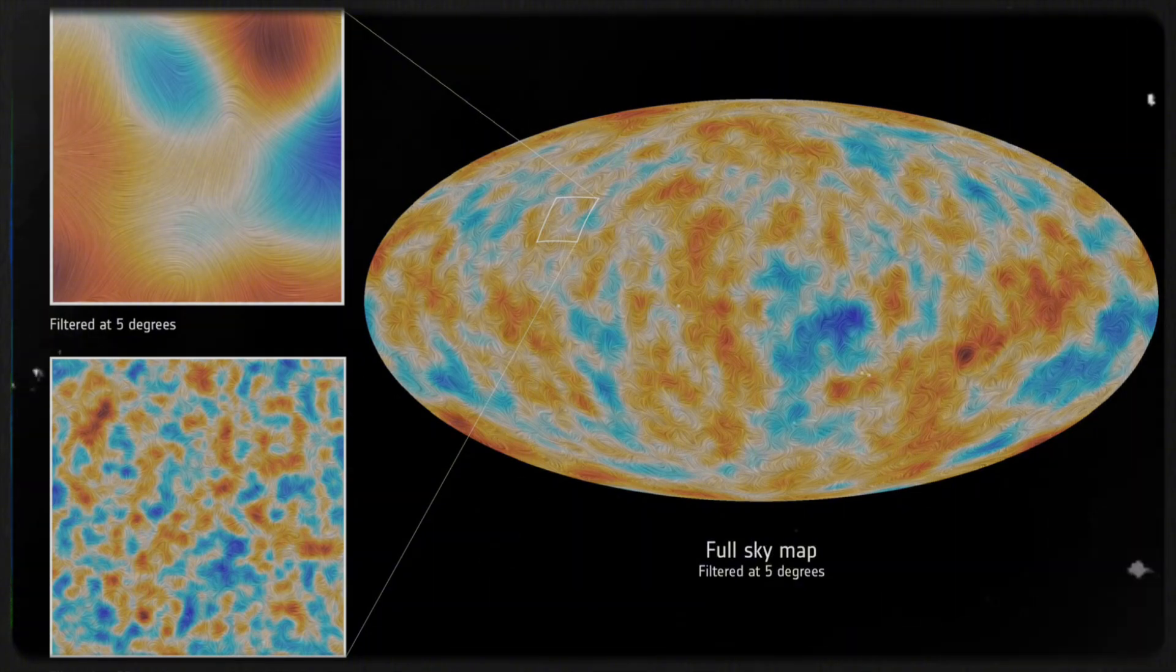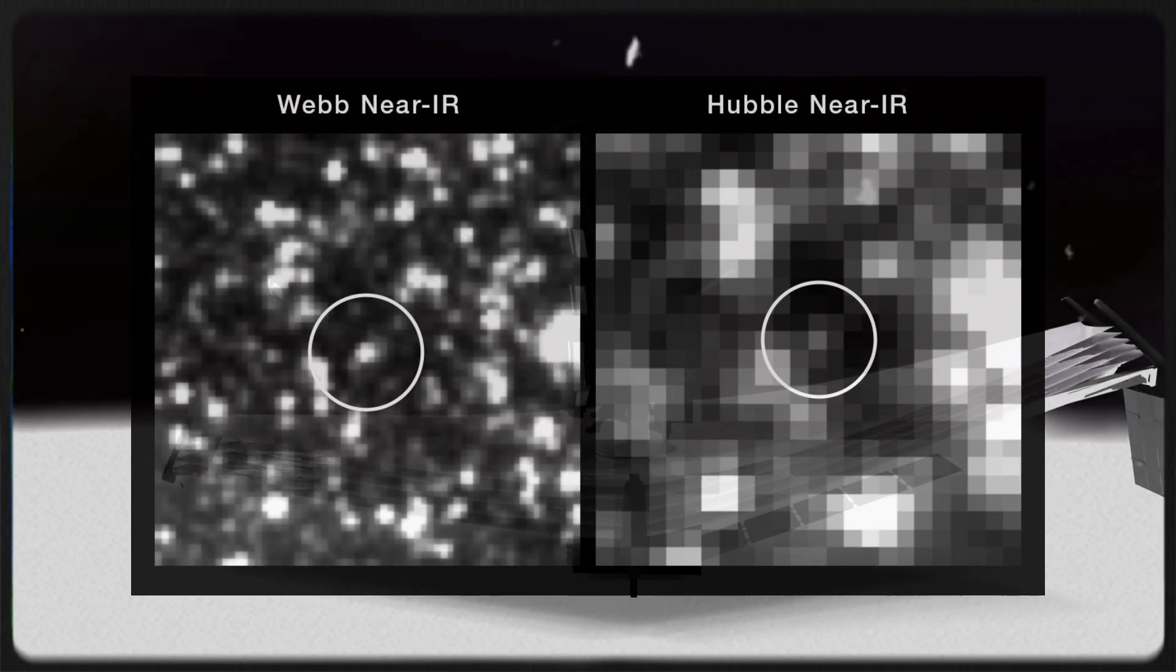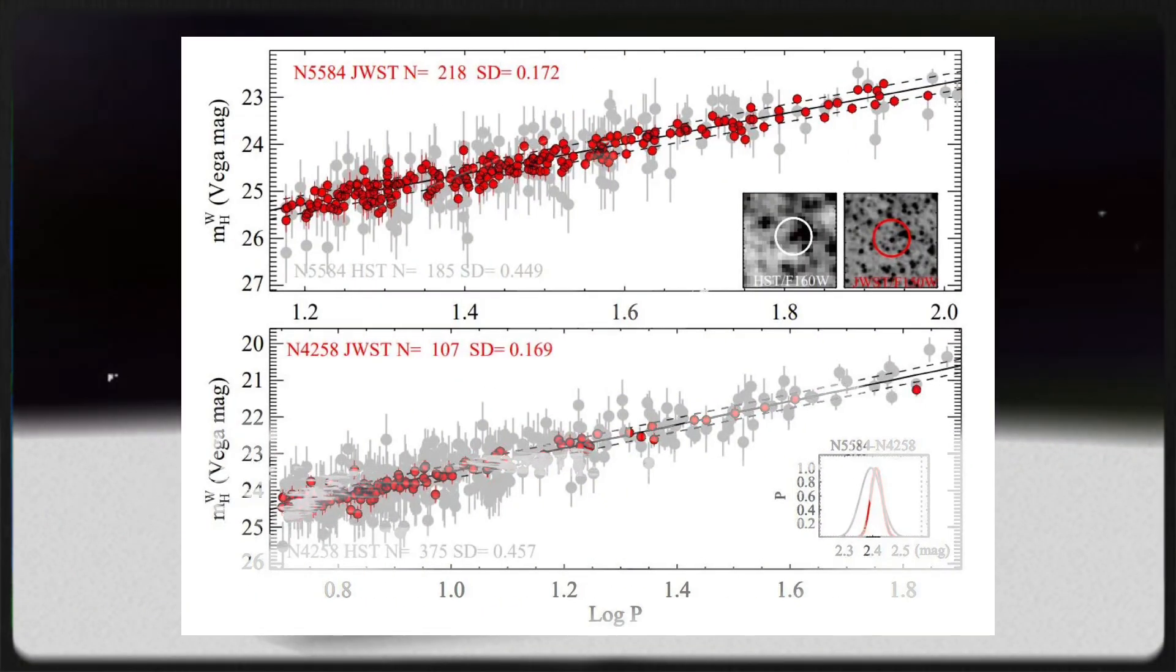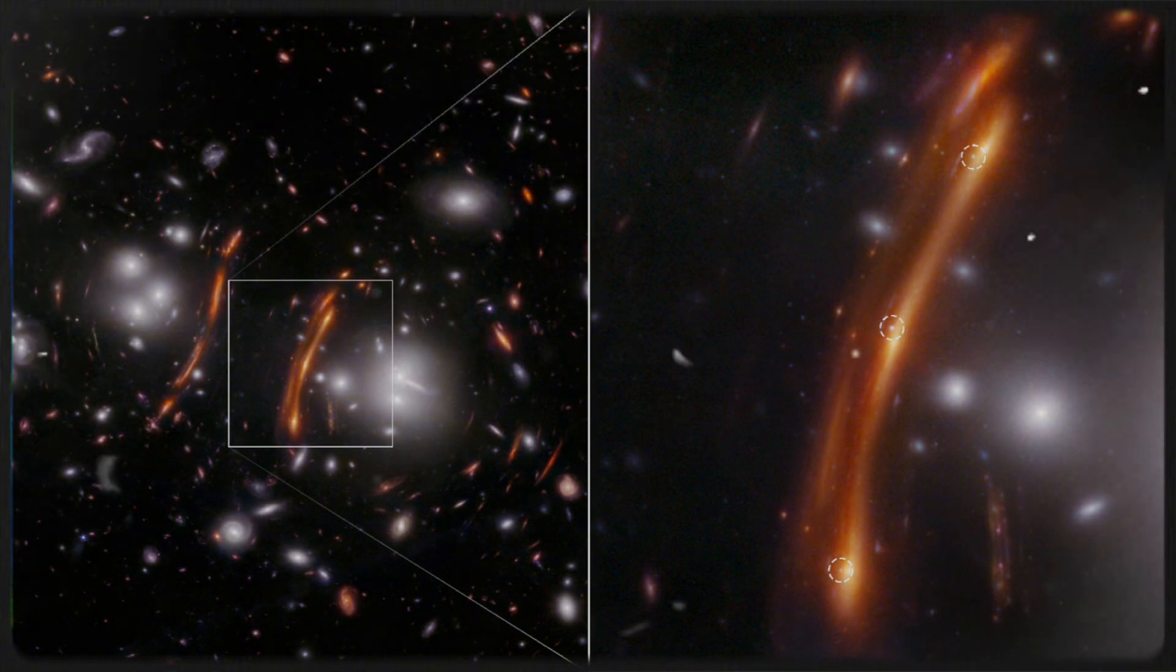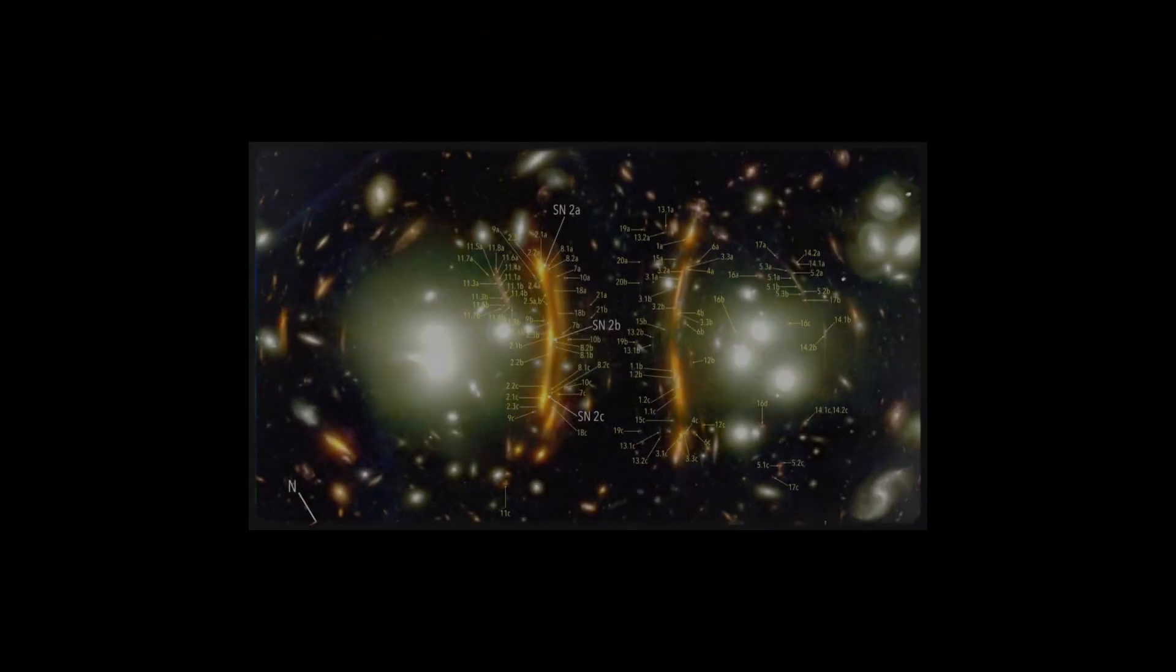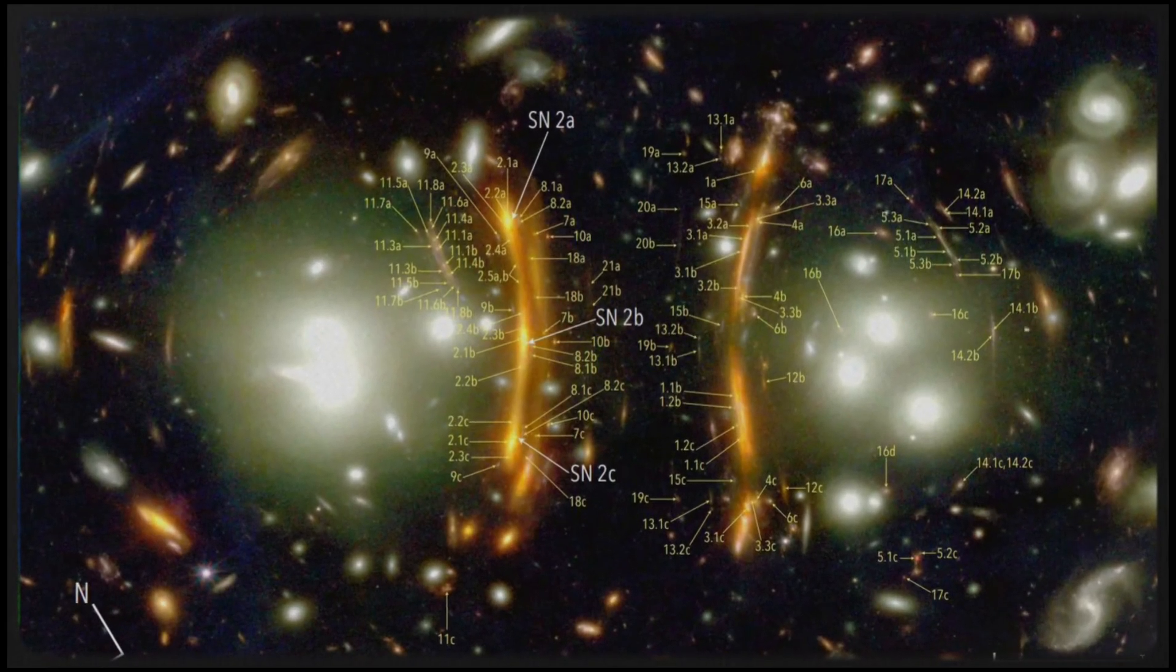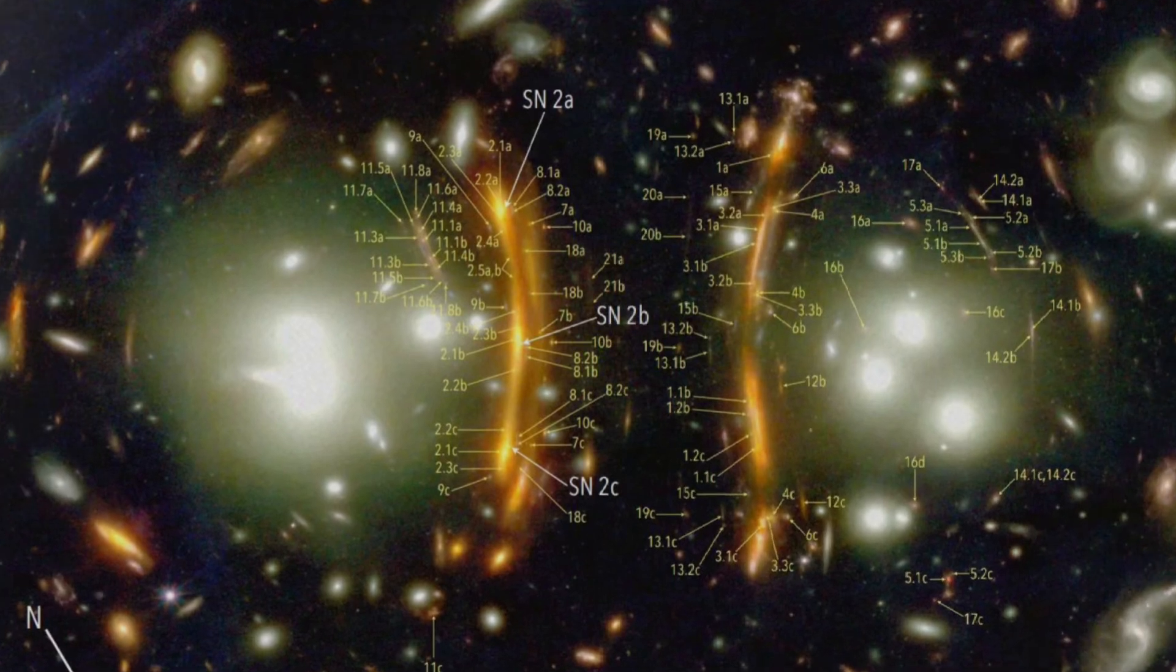Enter the James Webb Space Telescope, a groundbreaking marvel equipped with super-sharp vision and unparalleled sensitivity that sets a new benchmark for astronomical observation. With its advanced technology, Webb embarked on an ambitious mission over the course of two years to observe and analyze Cepheid variables and Type 1a supernovae scattered across various galaxies. The goal was clear, to provide a more precise measurement of cosmic distances and to resolve long-standing uncertainties about the rate of the universe's expansion, which had left astronomers puzzled for decades.